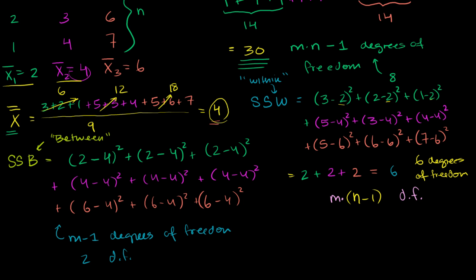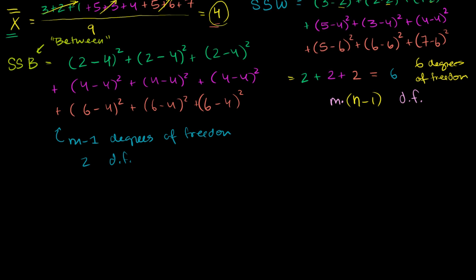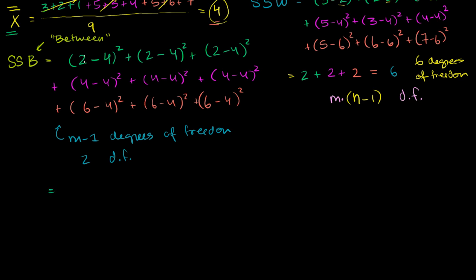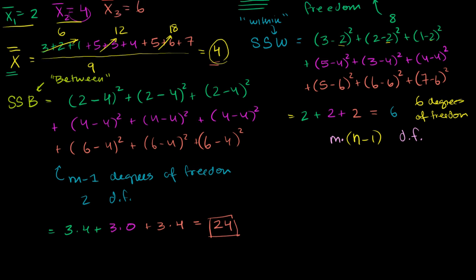Let's calculate the sum of squares between. It's going to equal: (2 minus 4) is negative 2, squared is 4, and we have three of those — so 3 times 4. Plus 3 times 0 for the second group. Plus the third group: (6 minus 4) is 2, squared is 4, giving 3 times 4. So 3 times 4 plus 0 plus 3 times 4 equals 12 plus 0 plus 12, which equals 24. So the variation due to the difference between the groups is 24.